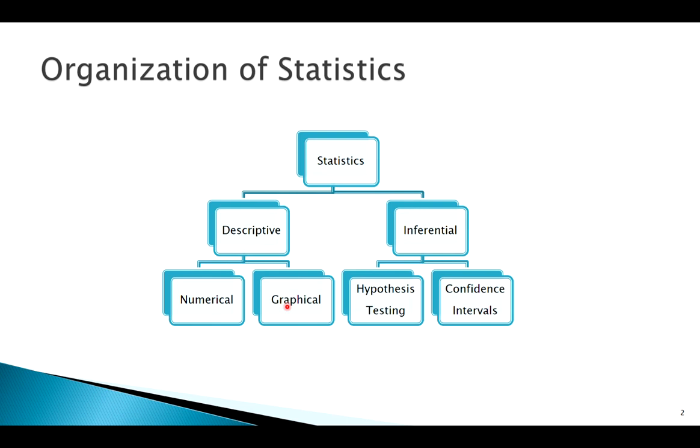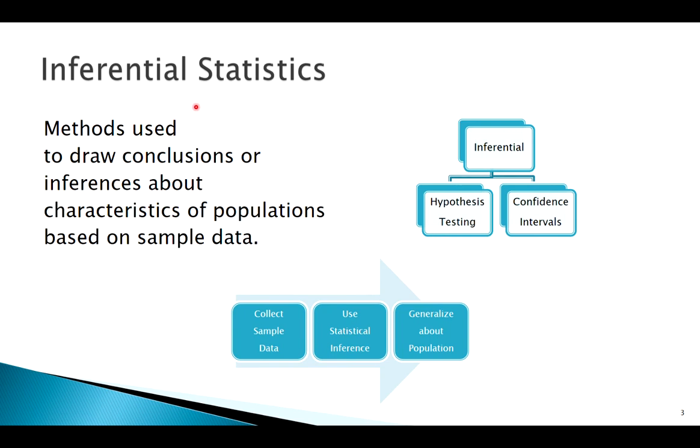We've got all that down and now we're moving into inferential statistics. The idea of inferential statistics is we're using a sample to figure something out about the population that it came from. We know about sampling, good sampling techniques, all this kind of stuff. We take our sample, we use inference methods to then be able to draw some conclusion, to infer, to generalize about our population.